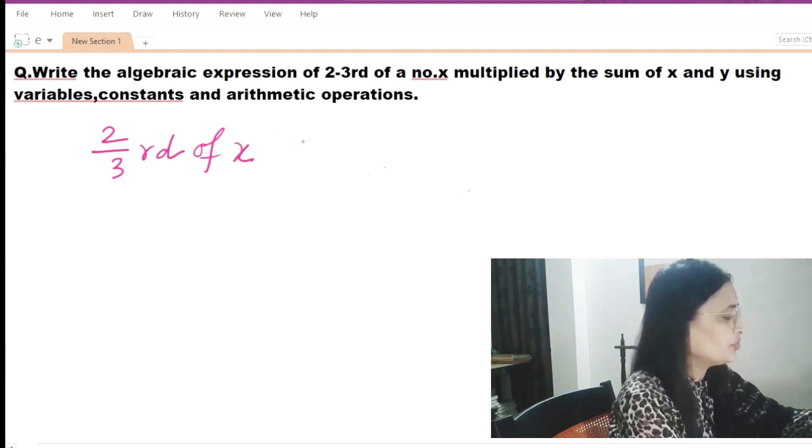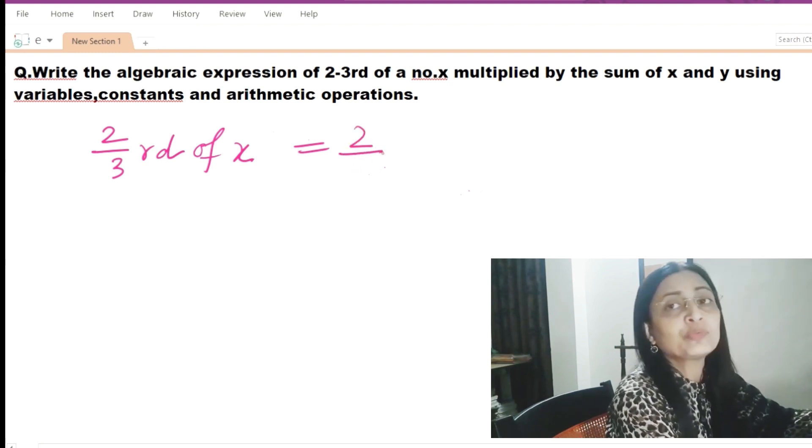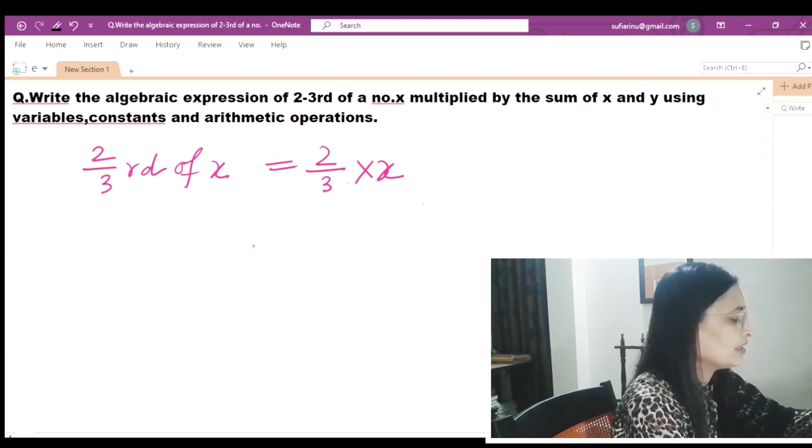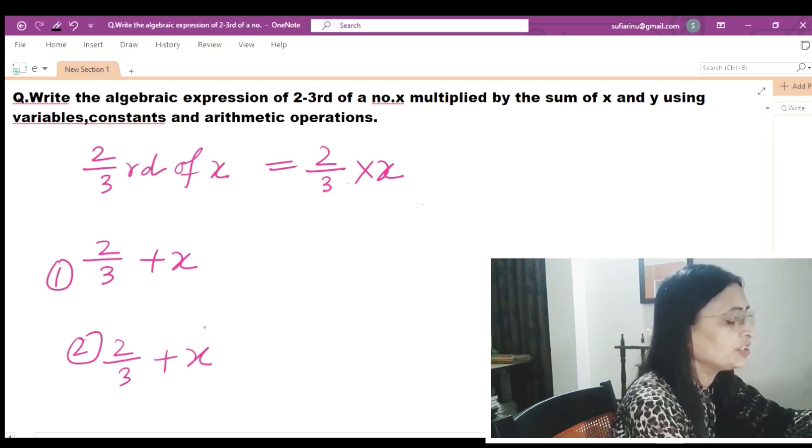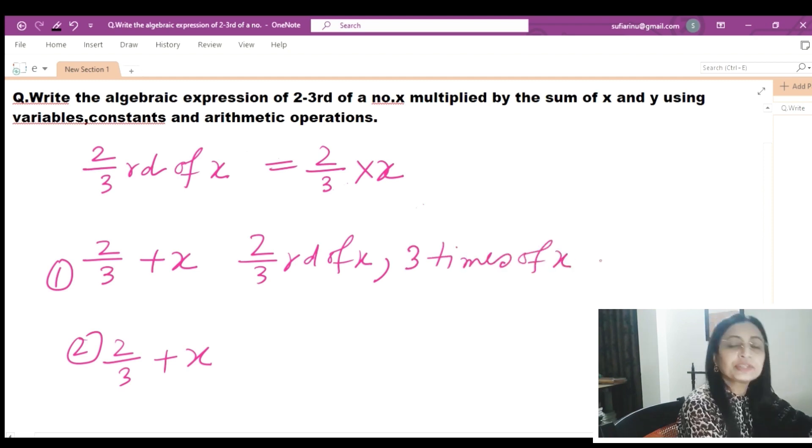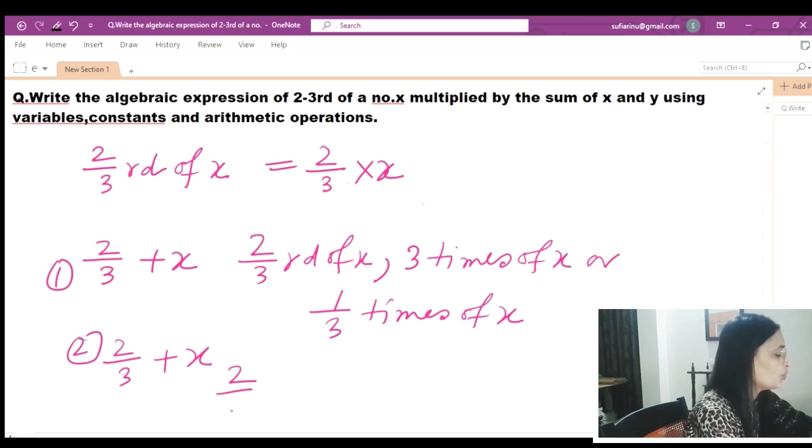Sometimes there is confusion: should we write two by three plus x or two by three into x? If it's written two by three more than x, then we will write like two by three plus x. And again, if two by three is added to x, obviously it will be like two by three plus x. But if it's written like two-third of x, or three times of x, or one-third of x, then in that case we'll write two by three into x, one by three into x, or three into x. Three times of x means three x.